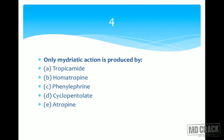We are left with option C, phenylephrine. Phenylephrine is an alpha agonist, a sympathomimetic drug. It acts on the alpha receptor in the radial muscle of the iris. When this receptor is stimulated, what is the result — miosis or mydriasis? Alpha receptor, sympathetic action, present on the radial muscle of the iris.